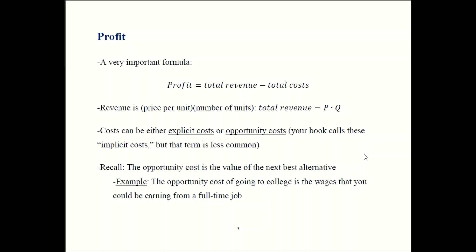We had several examples, one of which was going to college. If you weren't going to college, what would you be doing instead? You'd be working and earning a wage. So if you're going to college, you face the explicit costs of tuition, fees, and textbooks. But the biggest cost of going to college is actually the opportunity cost — the money you could be earning from a full-time job. Even if you're working part-time, you still face an opportunity cost, because without all your classes you could be working more hours.